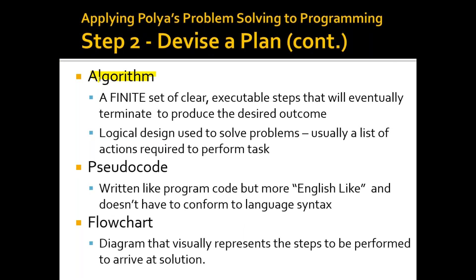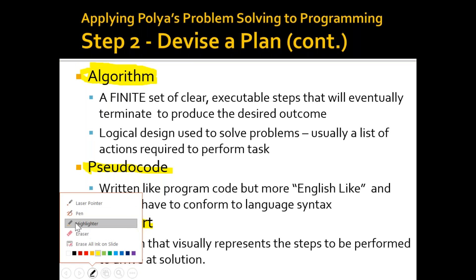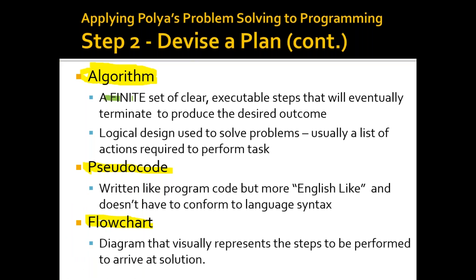In fact, the word 'algorithm' is Arabic in origin — the main resource of the word algorithm comes from Arabic, from the Arabic scientist Al-Khawarizmi. According to Al-Khawarizmi, he created or invented the rules and main steps to solve problems. We also have pseudocode and flowcharts. An algorithm is a finite set of clear, executable steps that will eventually terminate to produce the described outcomes. We need to set up every step from the beginning to the end of the process.